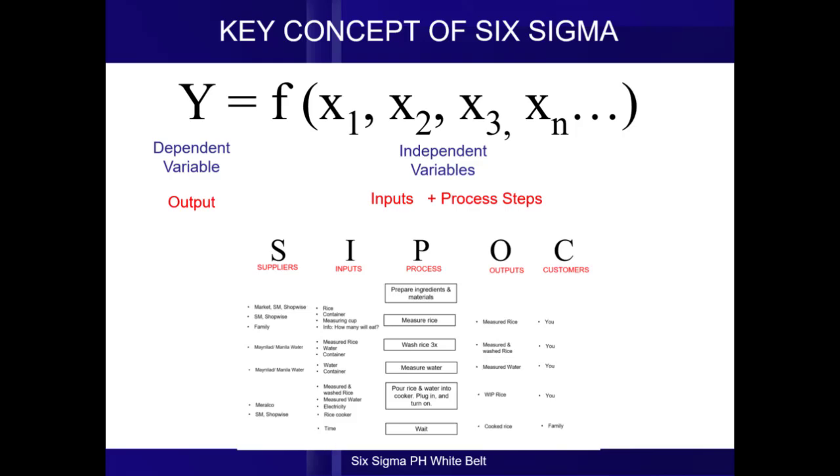Now, what does it mean? What it means is, for every process, there is at least one output. And the quality of the output of the process depends on the inputs and process steps.